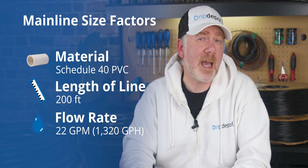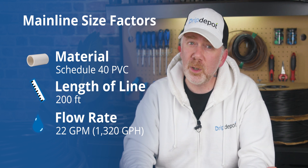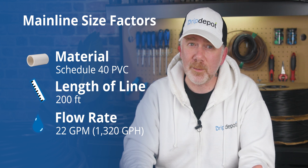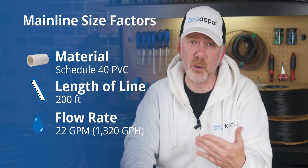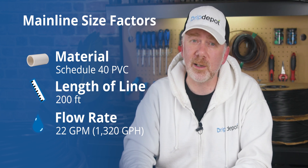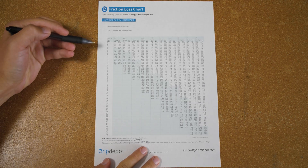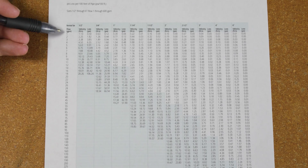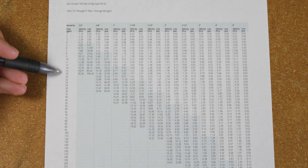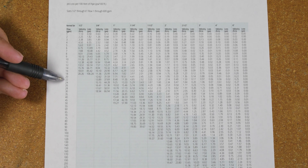The poly tubing calculator won't work here since we're going to be using PVC, and it's likely we'll need a diameter larger than one inch, which is the largest the calculator handles. To size our mainline here, we'll have to use the friction loss charts for PVC. Reading the charts is pretty straightforward: the rows are where you'll find your gallons per minute, and all you need to do is locate your system's flow rate — in this case, 22 gallons per minute.